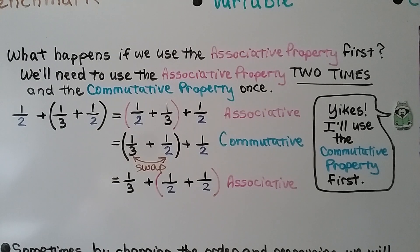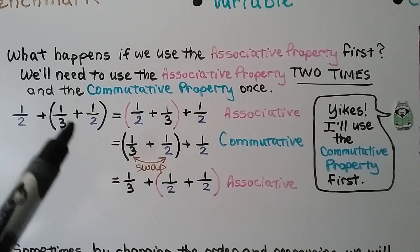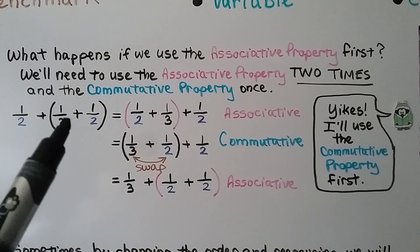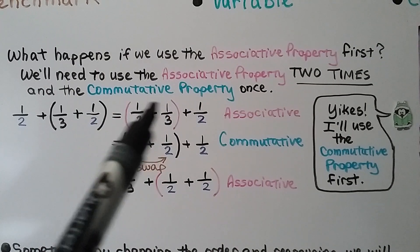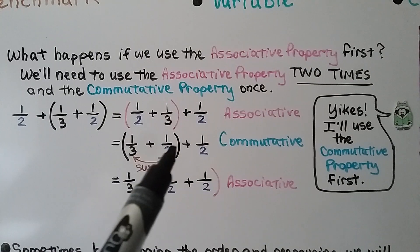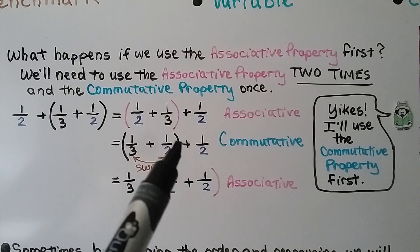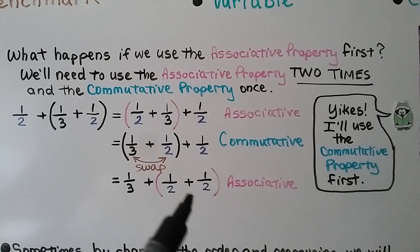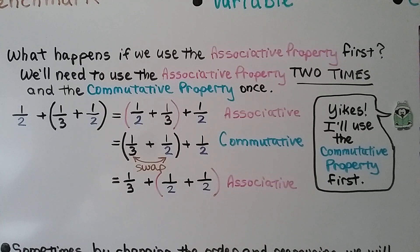What happens if we use the associative property first? We'll need to use the associative property two times and the commutative property once. If we have 1 half plus 1 third plus 1 half in parentheses and use the associative property first to change the grouping, we'd then need to swap places using the commutative property so the like denominators are next to each other, then change the grouping again with the associative property a second time. So it's better to do the commutative property first — switch their places, then switch the grouping.